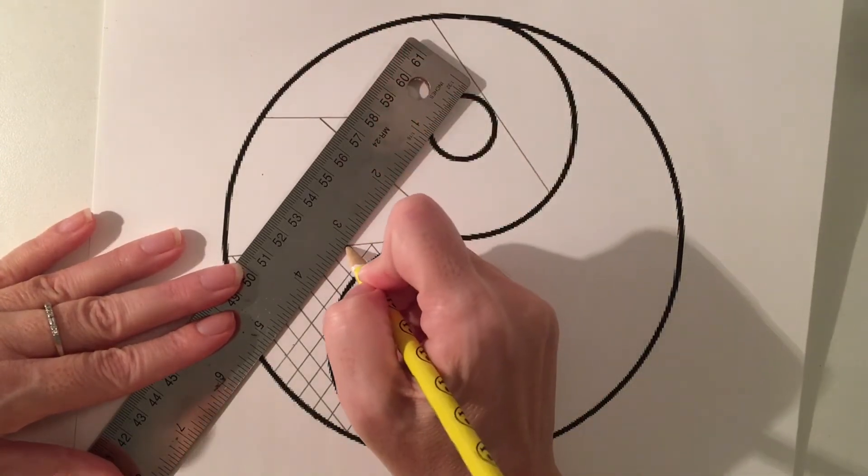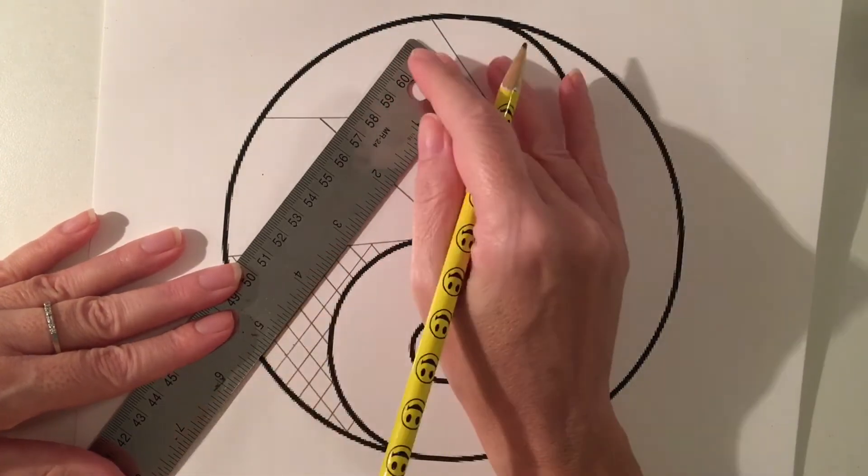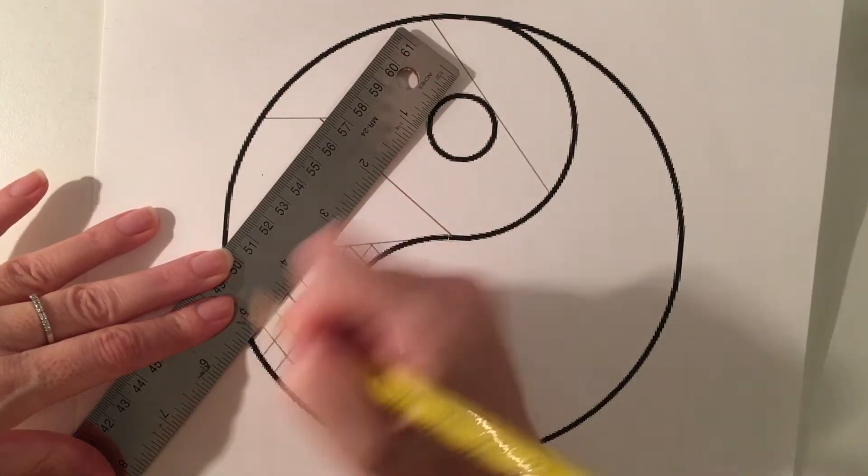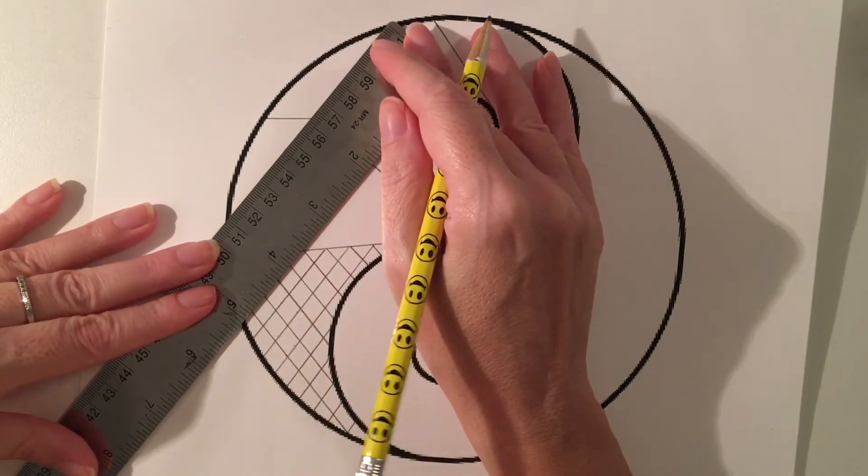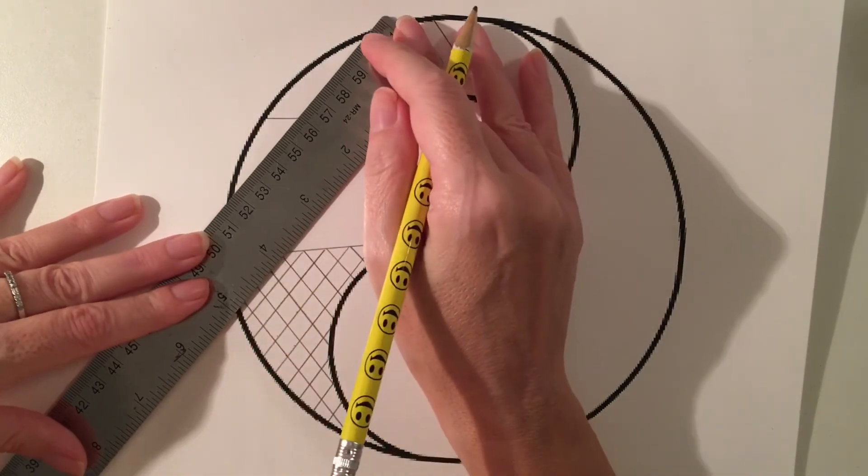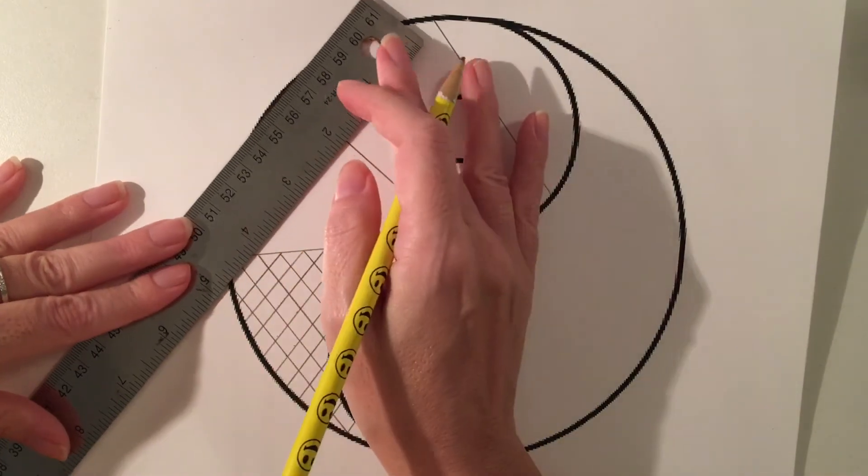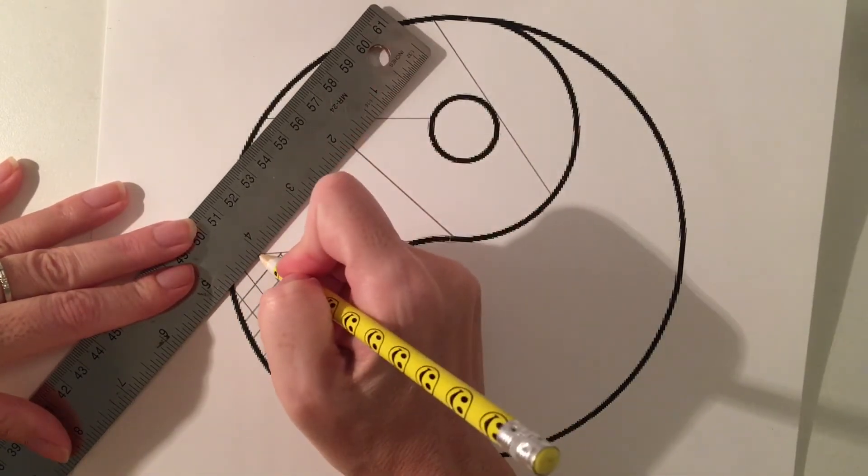So I'm going to continue working on my zentangles. I'm going to fill in all five sections with a different zentangle. So I'm going to go ahead and finish up my zentangles and then you'll get to see what they look like after I'm finished.